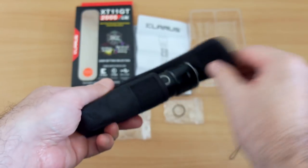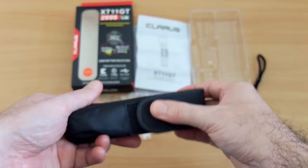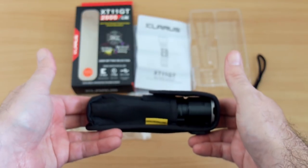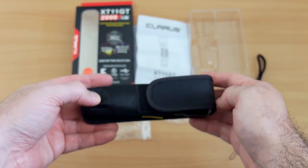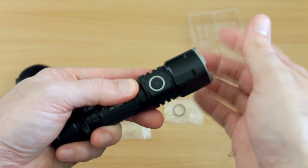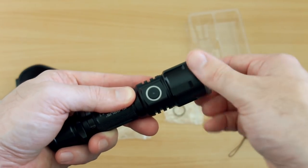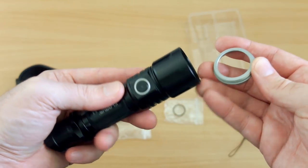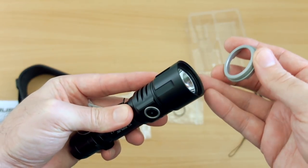Moving in a bit closer onto the torch itself, we can see the type 3 anodized aluminum on this, nice finish as you'd expect. You can unscrew the front and there is a, I believe, a self-defense attachment that you can add to that.